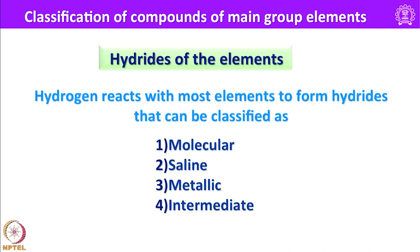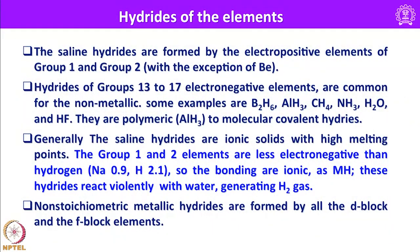Hydrogen reacts with most elements to form hydrides, which can be classified as molecular hydrides, saline or ionic hydrides, metallic hydrides, and intermediate hydrides. Saline hydrides are formed by the electropositive elements of group 1 and group 2, with the exception of beryllium, whose hydride has some covalent character. Hydrides of group 13 to 17 elements are essentially covalent in nature — for example, diborane B₂H₆, aluminium hydride AlH₃, methane CH₄, NH₃, H₂O, and HF are all covalent species, with aluminium hydride being polymeric. Generally, saline hydrides are ionic solids with high melting points. The group 1 and 2 elements are less electronegative than hydrogen — for example, sodium has 0.9 and hydrogen has 2.1 — so their bonding is essentially ionic with composition MH.